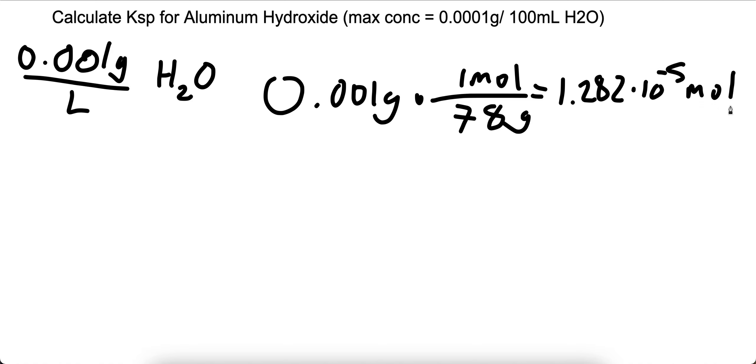This is how many moles of Al(OH)3. Now we can consider that since we're dividing it by a liter, we'll have the same molarity. So we'll have 1.282 times 10 to the negative 5th molar of Al(OH)3.